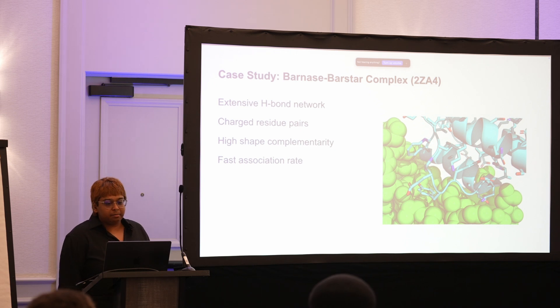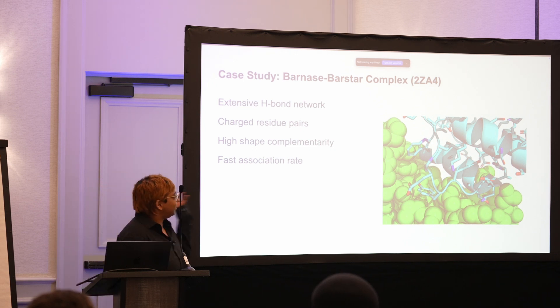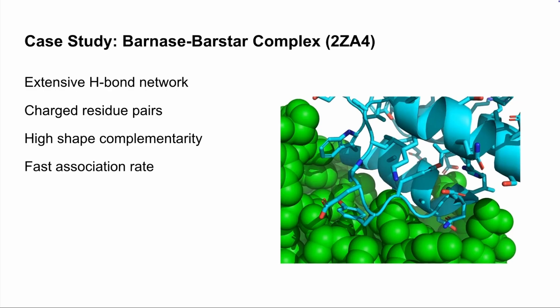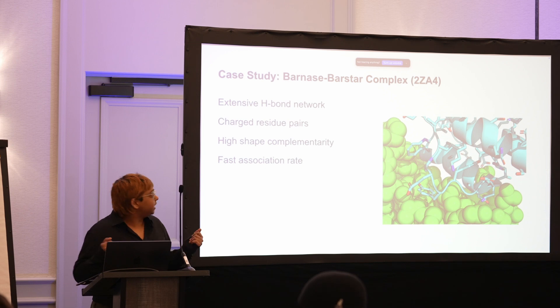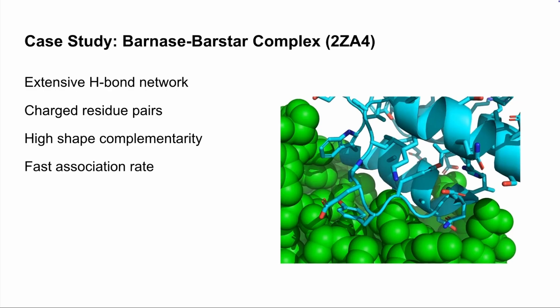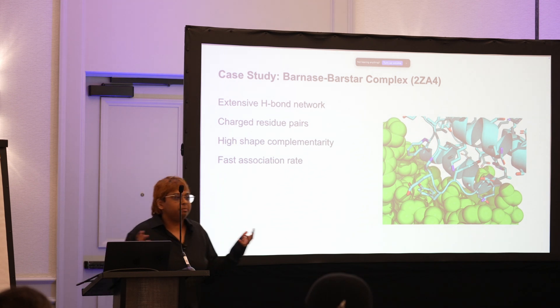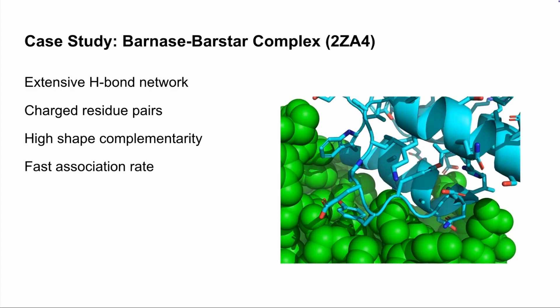I want to look at this classic example because I think it's really beautiful how the two interfaces complement each other. I think it would be great if everyone could pull up this structure on their computers and look at it, and then we'll jump into the activity from there. So the PDB code is 2ZA4. In PyMol you can go into the command line and type fetch space 2ZA4 and you should be able to get the structure. And then I want to hear from you guys what do you think makes this one of the strongest interfaces in nature.